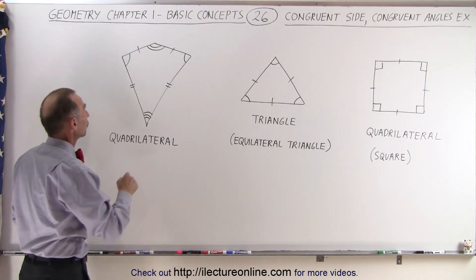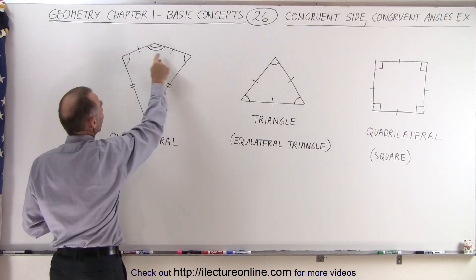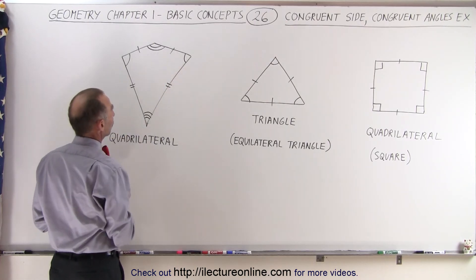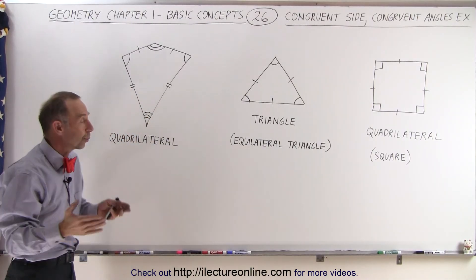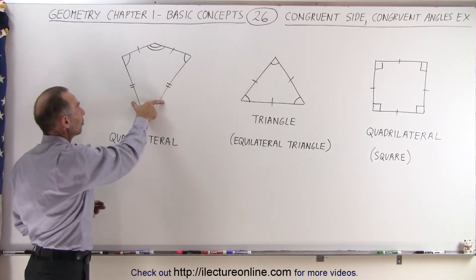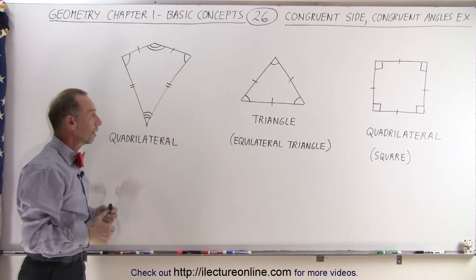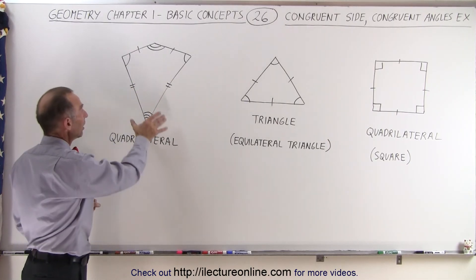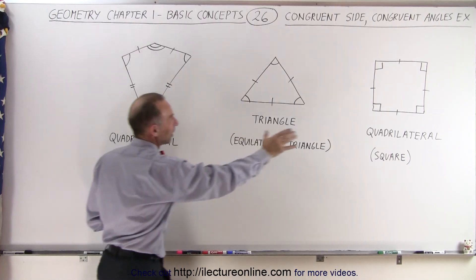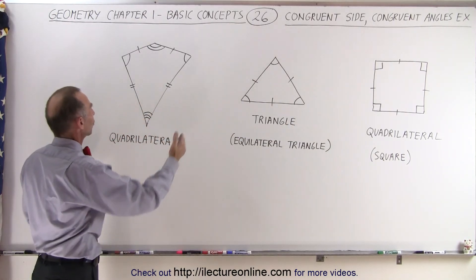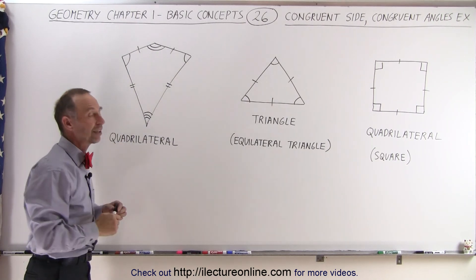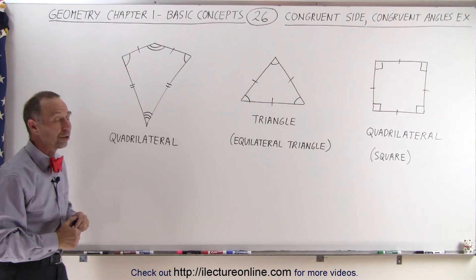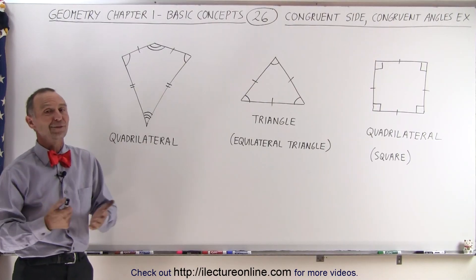As far as the sides are concerned, these two sides have the same tick mark, so those two sides are the same length and are congruent. These other two sides each have two tick marks, meaning those are congruent with one another as well. So we have two pairs of congruent sides, but this figure is definitely not a square because a square requires all four angles to be the same and all four sides to have the same length. That is not the case here, so we simply call it a quadrilateral — it has four sides.